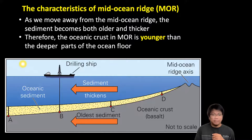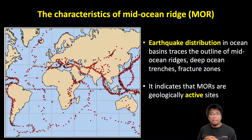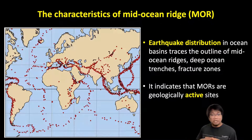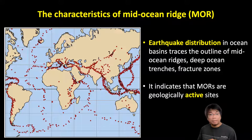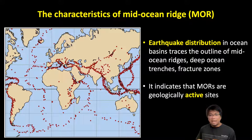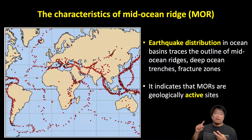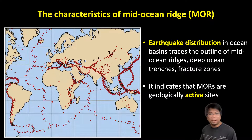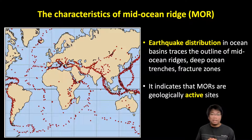Another characteristic is the earthquake distribution. This map shows red dots representing earthquake epicenters. The earthquake distribution in ocean basins traces the outline of Mid-Ocean Ridges. Not only that, it also outlines the deep ocean trenches as well as fracture zones in ocean basins. This tells us that Mid-Ocean Ridges are geologically active sites.